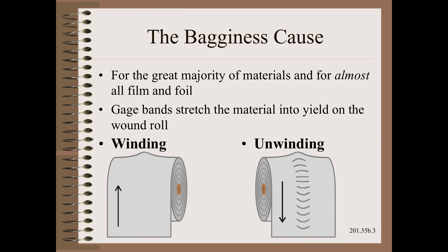While there is not a single cause of bagginess, there is a single major cause. Webs that are manufactured or converted with gauge bands in them — these areas of relatively higher thickness — stack up to make wound rolls with profile problems. Specifically, a variation of diameter, hardness, MD stress, and CD stress that is much higher under the gauge bands than elsewhere. What this can do is yield the material, making it longer there, as we discussed in great detail in Module 9 of Web 101.